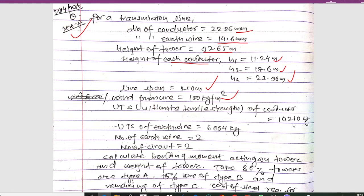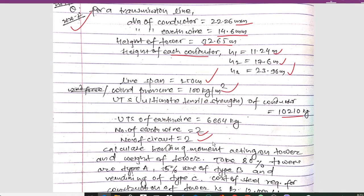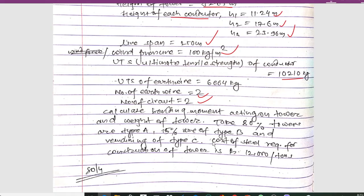The UTS (ultimate tensile strength) of the conductor is 102.10 kg, UTS of earth wire is 6664 kg, number of earth wires is 2, number of circuits is 2. We have to calculate the bending moment and weight of the tower. 80% of towers are type A, 15% are type B, and the remaining 5% are type C. The cost of steel for tower construction is given as 2/100 per tonne.